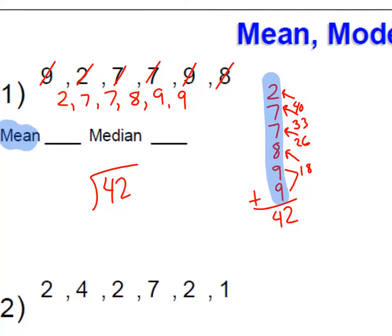But so 42 is my sum. Now I take that 42 and I need to divide it. I need to divide it by however many variables there were. And we had 1, 2, 3, 4, 5, 6 variables. So I'm going to take 42 and divide it by 6.